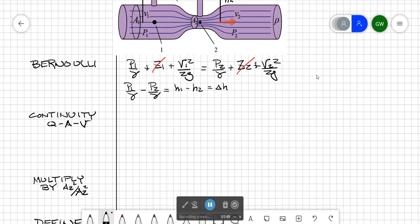Our left hand side of the equation becomes delta h and our right hand side of the equation is v2 squared over 2g minus v1 squared over 2g.